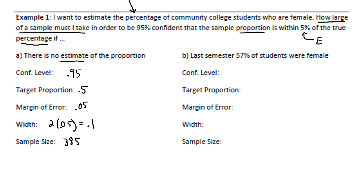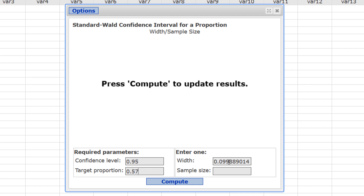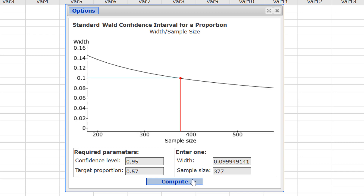In Part B, it's the same exact idea, except we have an estimate. Last semester, 57% of the students were female. We can use that for the target proportion. The confidence level is still 0.95. The target proportion is now 0.57. The margin of error is still 0.05, which makes the width 0.1. In StatCrunch, we change the target proportion to 0.57, reset the width to 0.1, press Compute, and there's the sample size: 377.